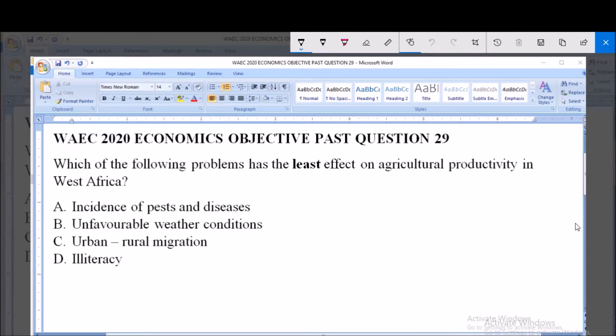Welcome. I will be answering WAEC 2020 Economics Objective Past Question 29. Which of the following problems has the least effect on agricultural productivity in West Africa?